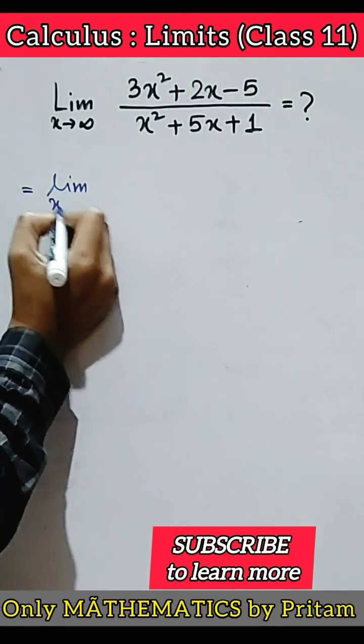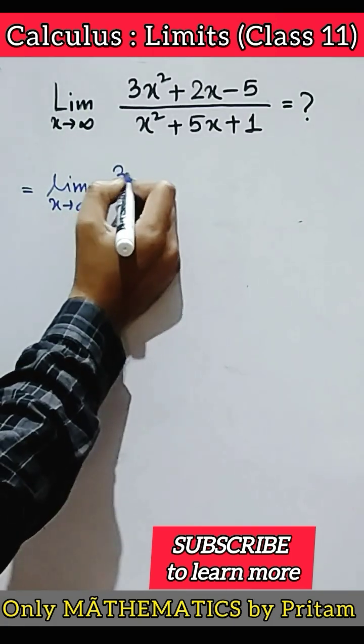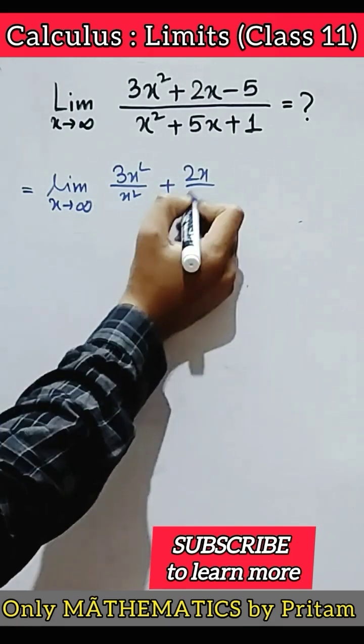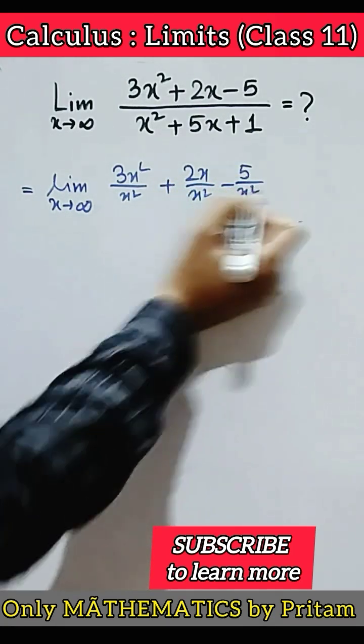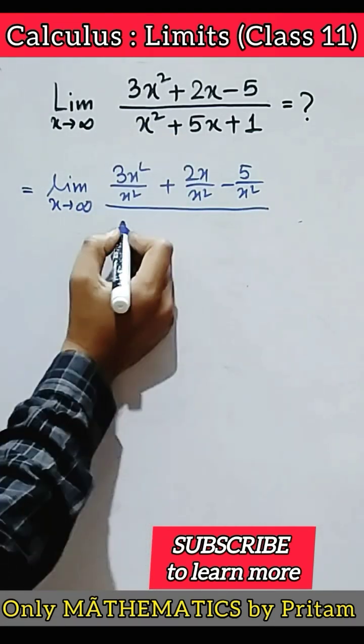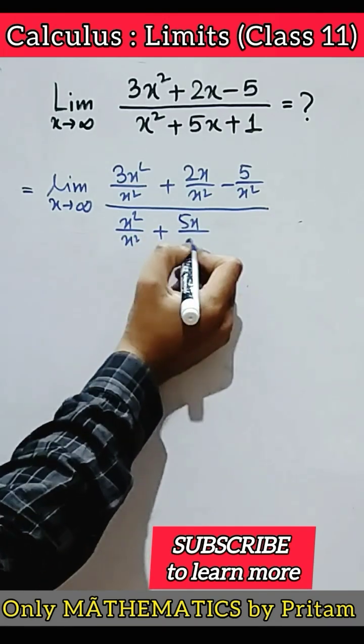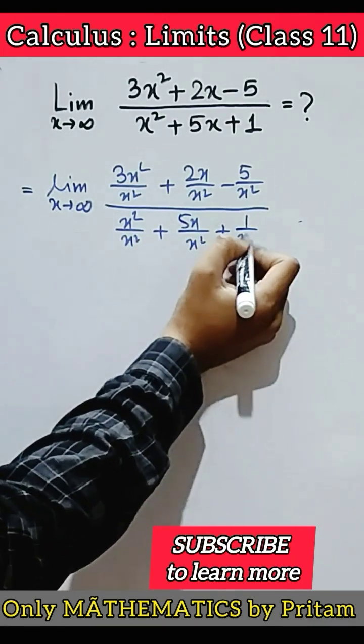So limit x tends to infinity 3x square by x square plus 2x by x square minus 5 by x square divided by x square by x square plus 5x by x square plus 1 by x square.